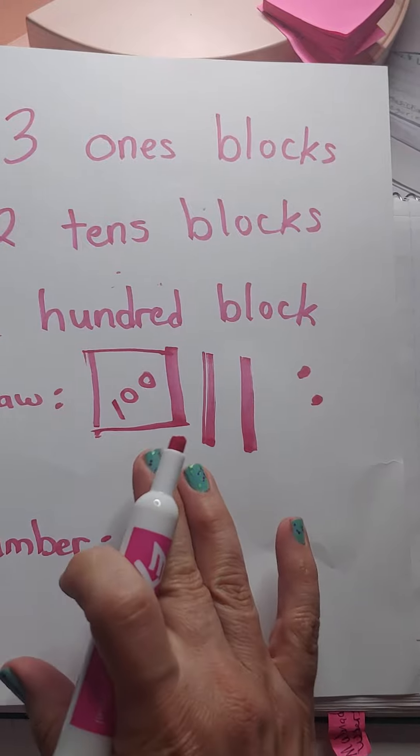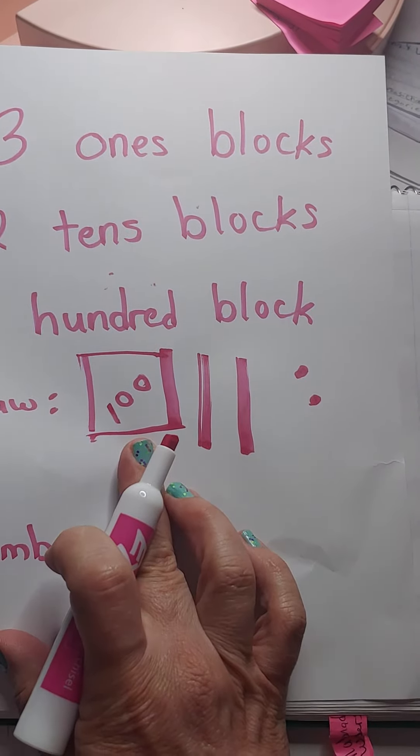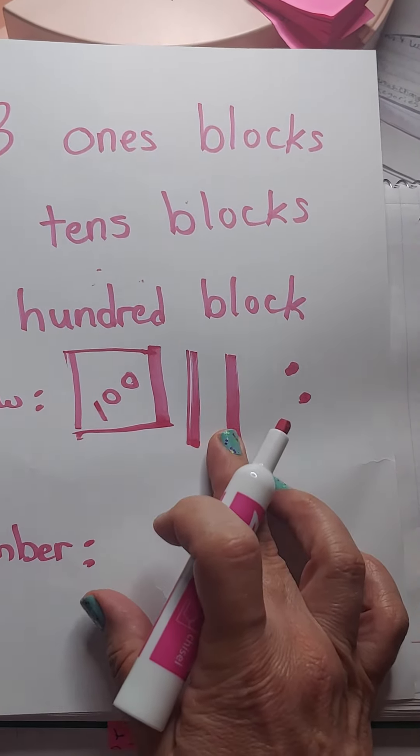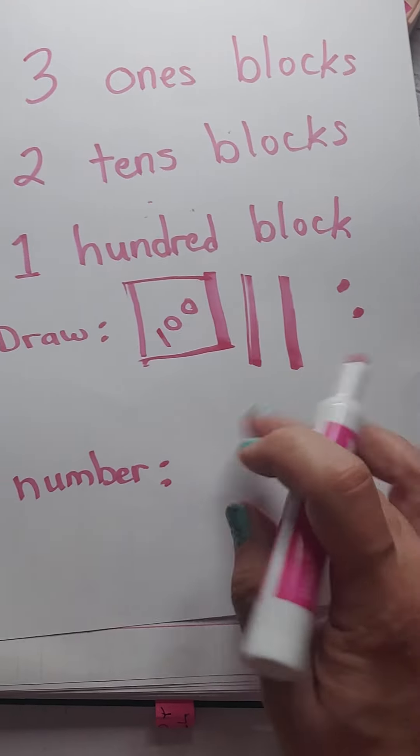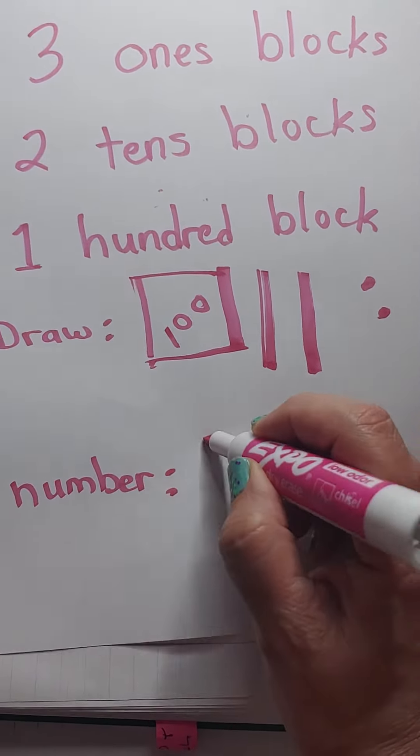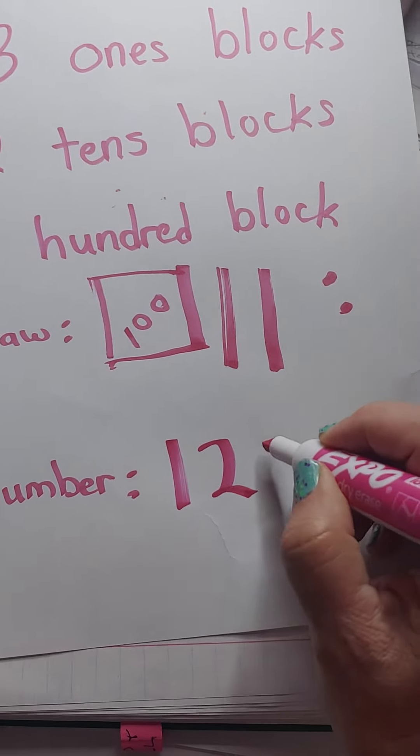Let's tell what our number is. One hundred. One hundred ten. One hundred twenty. One hundred twenty-one. One hundred twenty-two. The number is one hundred twenty-two.